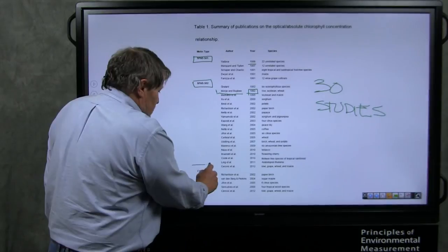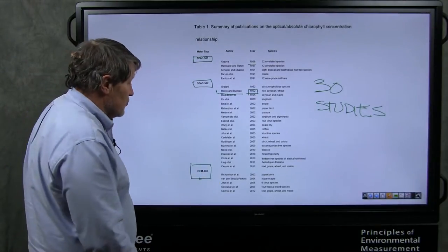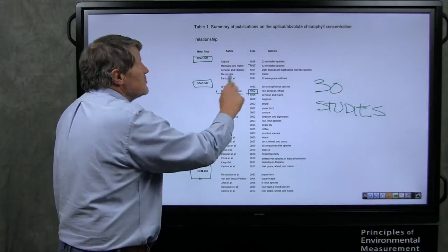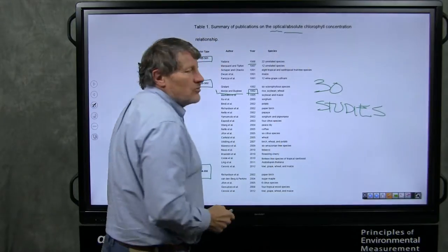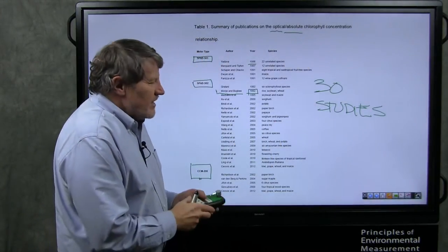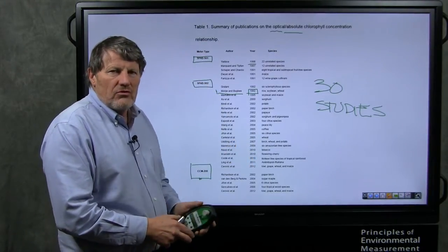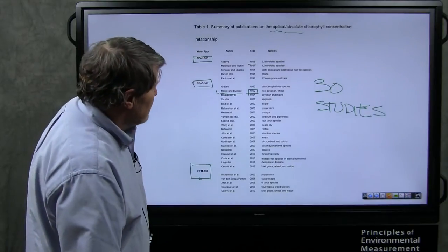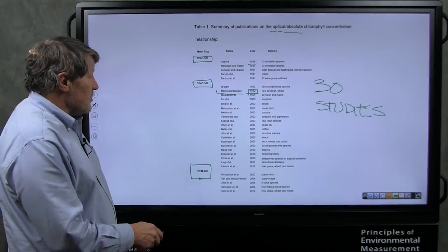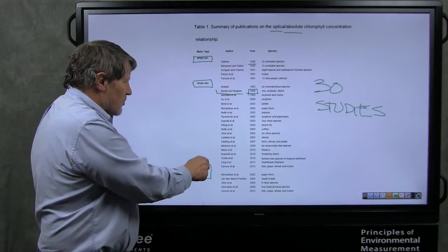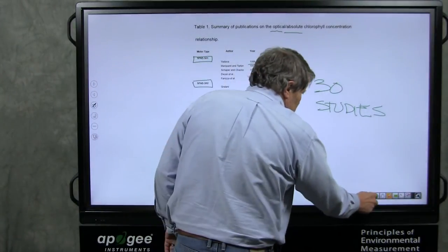Then, about ten years later, the papers start to show up with an OptiSciences meter, the CCM200, giving this what we call the optical absolute relationship. In other words, the relationship between what this meter can read and the true amount of chlorophyll in the leaf. We know this relationship is non-linear, which is one of the big problems, but the first thing we looked at was, how do these studies agree? They're on all different species, so let's take a look at that.